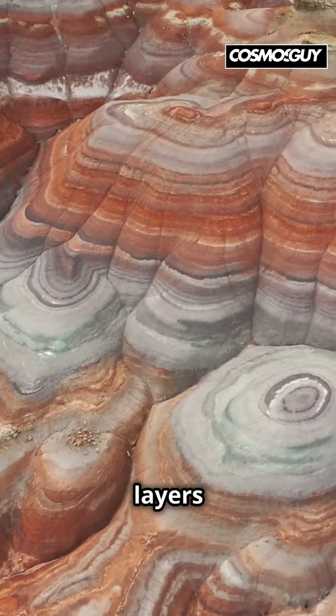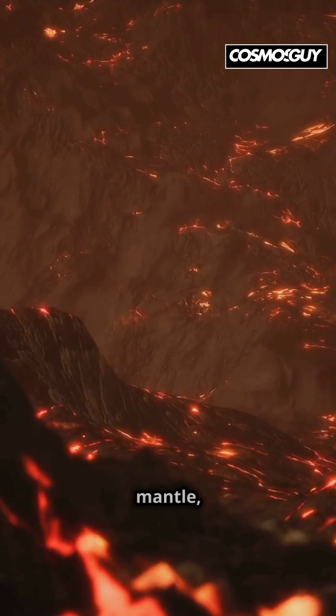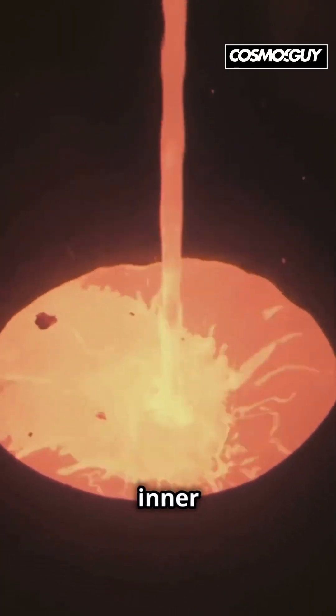The Earth is made up of four main layers: the outer crust, the semi-liquid mantle, the molten outer core, and the dense inner core.